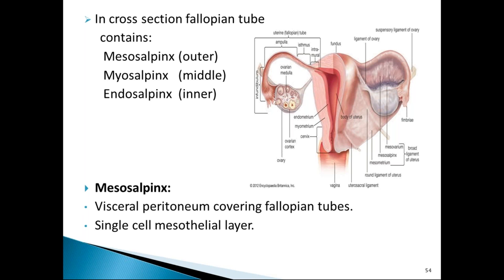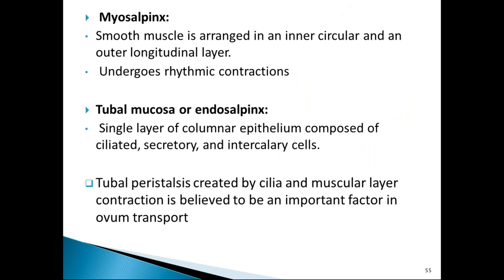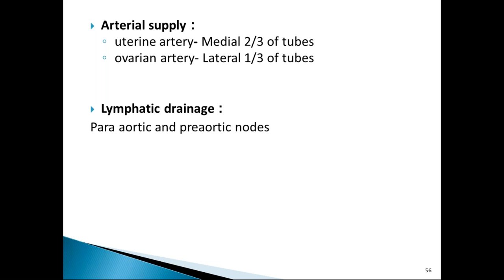On cross-section, each fallopian tube has three layers: mesosalpinx (the visceral peritoneal covering of single mesothelial cells), myosalpinx (two muscle layers — inner circular and outer longitudinal, causing rhythmic contractions), and endosalpinx (tubal mucosa — a single layer of ciliated columnar epithelium). Non-ciliated cells called intercalary or peg cells are found in the endosalpinx. Tubal peristalsis maintained by cilia and rhythmic muscle contractions is important for ovum transport. Arterial supply: medial two-thirds by uterine artery, lateral one-third by ovarian artery. Lymphatics drain to para-aortic and pre-aortic nodes.